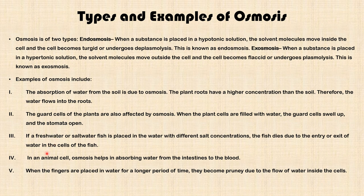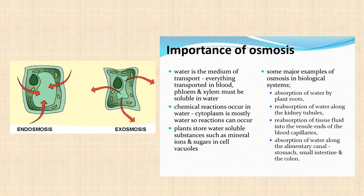That is why freshwater fishes must stay in freshwater and saltwater fishes must stay in saltwater. Four: in an animal cell, osmosis helps in absorbing water from the intestine to the blood, especially the large intestine. Five: when fingers are placed in water for a long period of time they become pruney due to the flow of water inside the cells. This picture shows endosmosis — water flows into the cell causing the plant cell to be turgid and firm — while exosmosis is when water flows out of the cell due to differences in concentration between the cells and the environment.